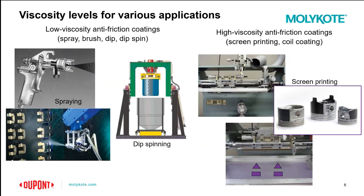Based on your application method, different viscosity levels might be preferred to make that process easier. Low viscosity anti-friction coatings are great for spraying, brushing, dipping, and dip spinning. And then we have high viscosity anti-friction coatings for things like screen printing. These coatings can be applied to surfaces of very unique geometries and in thick coatings.